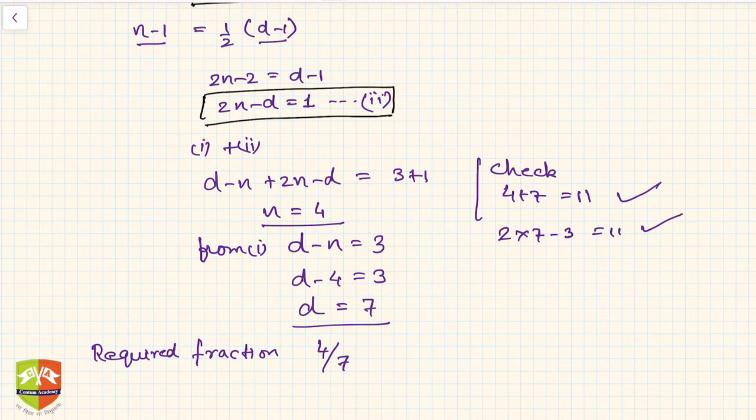Let us also check the second one. If the numerator is reduced by 1, it becomes 3, and denominator is reduced by 1, it also becomes 6. So 3 by 6 is half, which is true. That is what was mentioned in the question. So numerator becomes half the denominator. This is how fraction-related problems in linear equations in two variables will be solved.